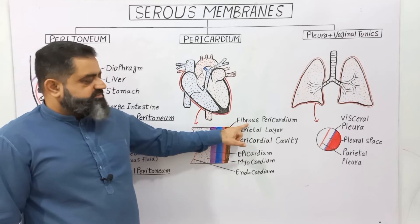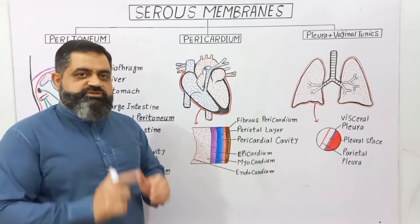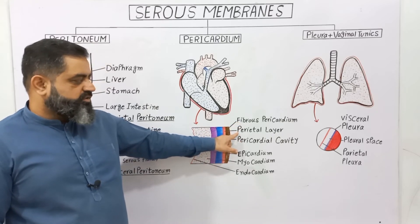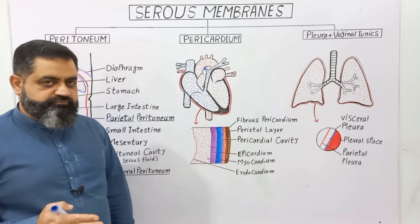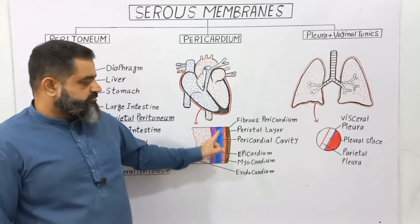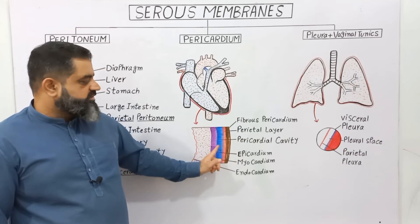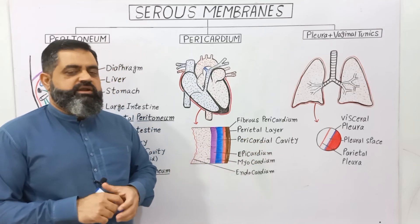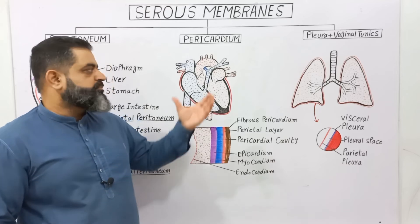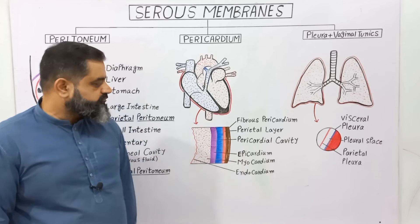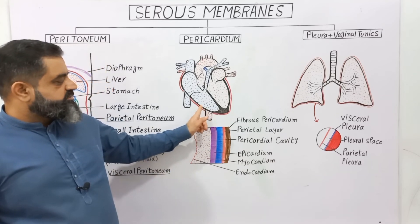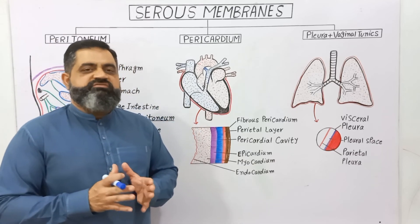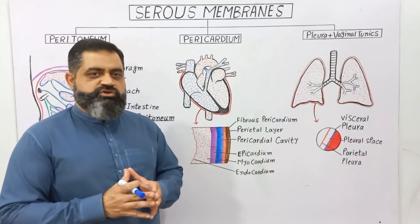The outermost layer of the pericardium is known as the fibrous pericardium, made up of very strong fibrous connective tissue. Just below the fibrous pericardium is a layer known as the parietal layer, which surrounds the heart. Between the heart wall and the parietal layer there is a cavity known as the pericardial cavity, which contains pericardial fluid. This fluid has a composition similar to saliva and helps to avoid friction during the process of beating of the heart.